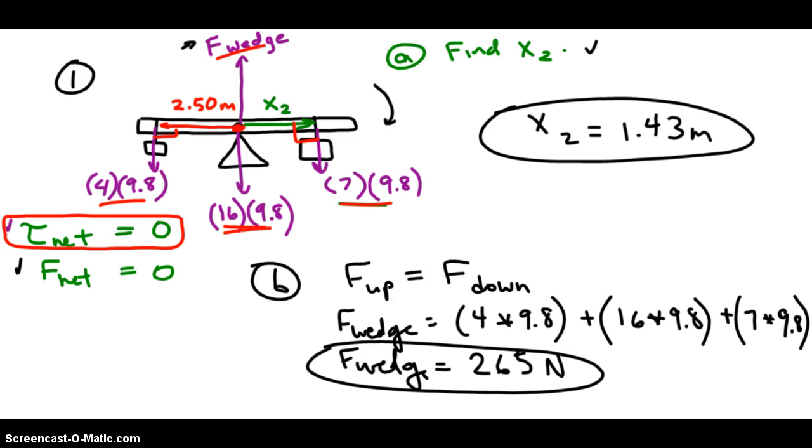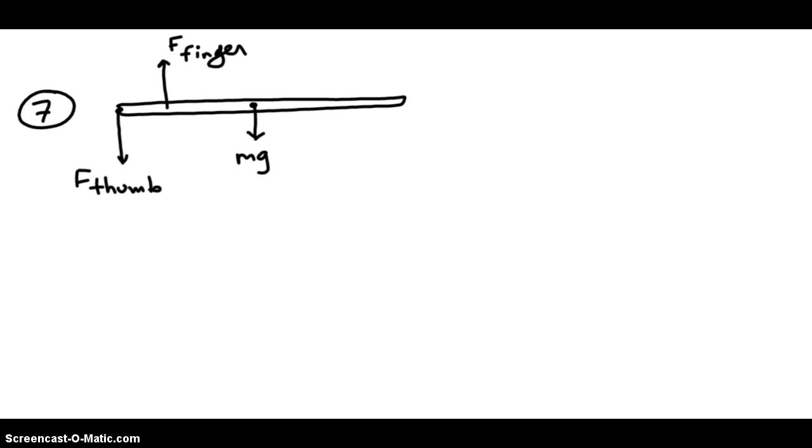The next thing I'm going to do is solve number seven. In number seven, we're given already the three forces acting on this bar. The person is holding the bar stationary and horizontally. That means that the net force is zero and the net torque is zero. And we're going to use both of those things in this problem. So the person is holding it with the hand, the thumb is pushing down on the far left, the finger is pushing up, and then the weight of the bar acts on its center of mass, like this.